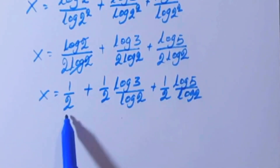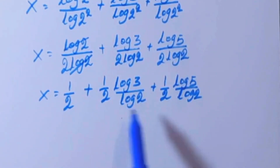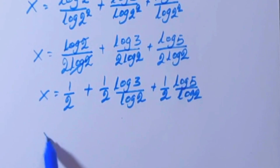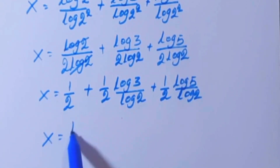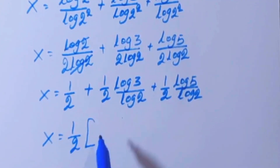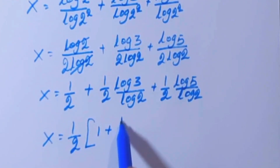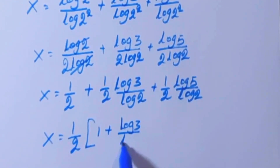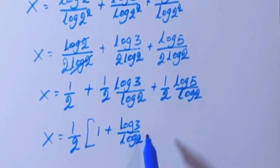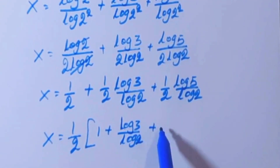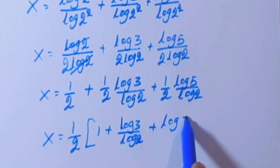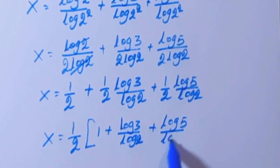We can factor out 1/2 common from all terms. So x equals (1/2) times the quantity (1 plus log 3 by log 2 plus log 5 by log 2).